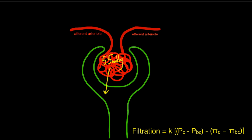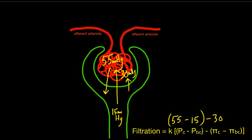The pressure in Bowman's space is around 15 millimeters of mercury, which opposes filtration of fluid. The oncotic pressure in glomerular capillaries is around 30 millimeters of mercury, which also opposes fluid movement. So: 55 minus 15, and then 30 is subtracted from that entire term. The net movement of fluid favors filtration — it's a positive 10 millimeters of mercury. This is why filtration is occurring under normal circumstances.